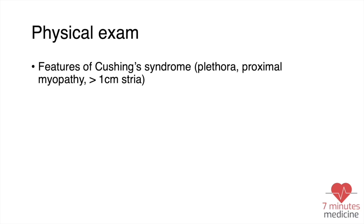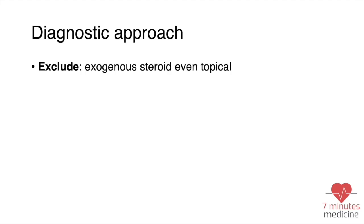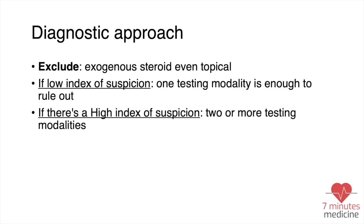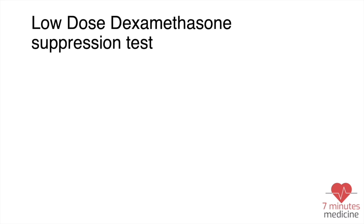You may also need to check blood pressure for hypertension. For the diagnostic approach, first we have to exclude exogenous steroid use — even topical steroids — because they may contribute to symptoms of Cushing syndrome. If there is no high index of suspicion, one testing modality is enough to rule out Cushing syndrome. If there is a high index of suspicion, you need two or more testing modalities.